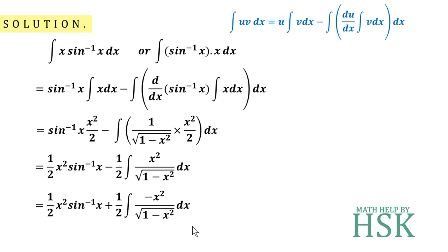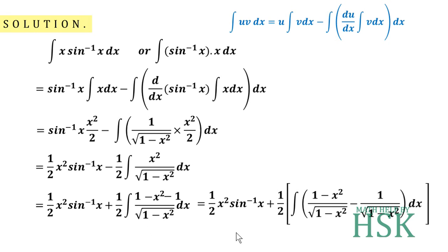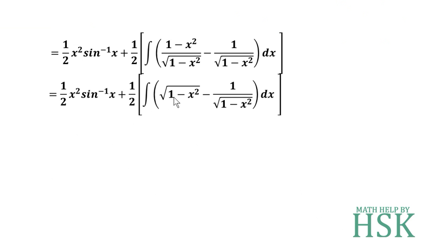Next, we add and subtract 1 in the numerator, treating (1−x²) as one part and −1 as a second part, dividing √(1−x²) separately across both terms. This gives (1/2)x²·sin⁻¹(x) + (1/2)·∫[(1−x²)/√(1−x²) − 1/√(1−x²)] dx. The (1−x²)/√(1−x²) simplifies to √(1−x²), so we write (1/2)x²·sin⁻¹(x) + (1/2)·∫[√(1−x²) − 1/√(1−x²)] dx.